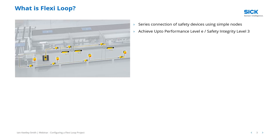That's just your input circuit — the overall performance level or safety integrity level has to take into account the configuration of the logic controller and output devices, i.e., the full safety function of the machine. One thing to note is the concept of fault masking, described in standard ISO 14119. If you have several gate switches with volt-free contacts connected in series and one has a wiring fault, you could get fault masking. By using these nodes on the FlexiLoop network, we no longer have that issue, so we can still maintain high performance and safety integrity levels.